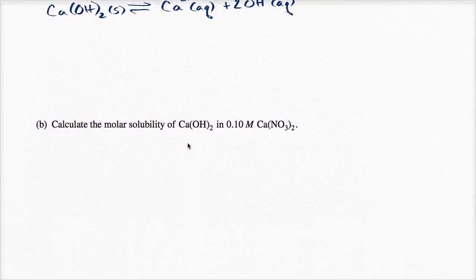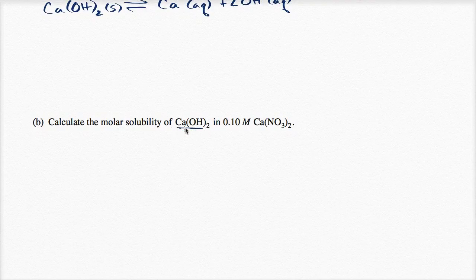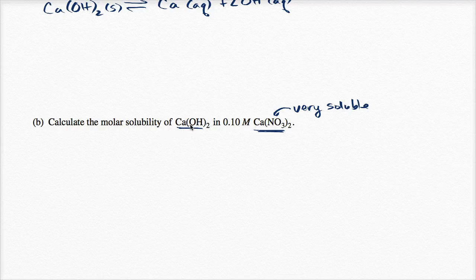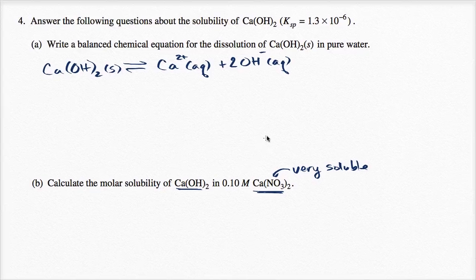Let's do the next part. Calculate the molar solubility of calcium hydroxide, not in pure water, but in a solution that already has a 0.10 molar concentration of calcium nitrate, which is a very soluble nitrate salt. How do we think about the molar solubility of calcium hydroxide — how much incremental calcium can be dissolved when you already have some calcium? For every concentration of calcium dissolved, you'll have twice the concentration of hydroxide dissolved. This will involve the solubility product.